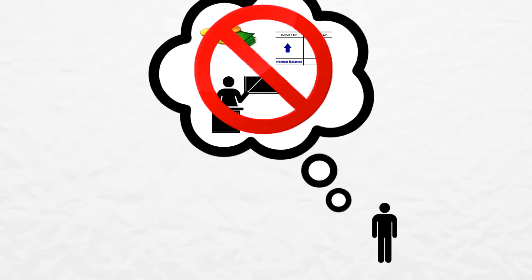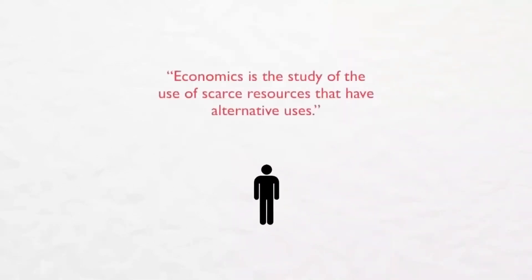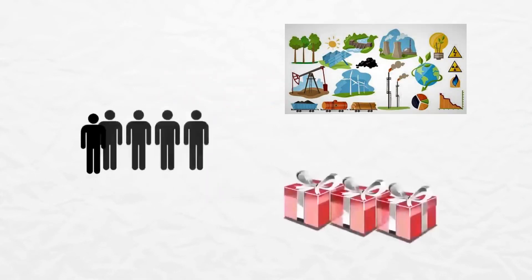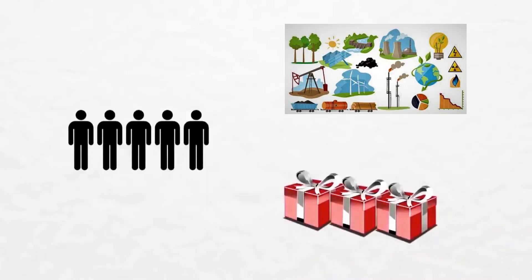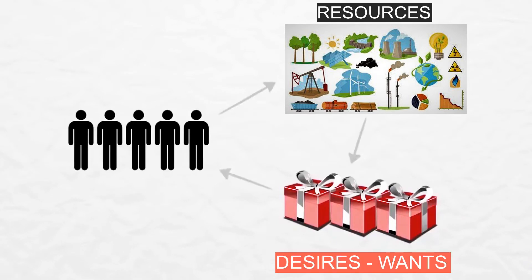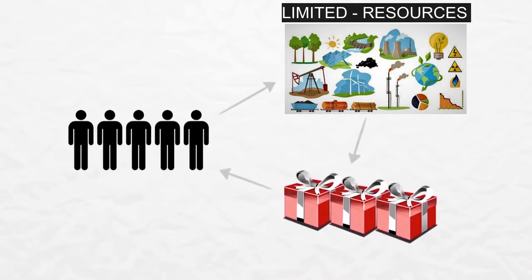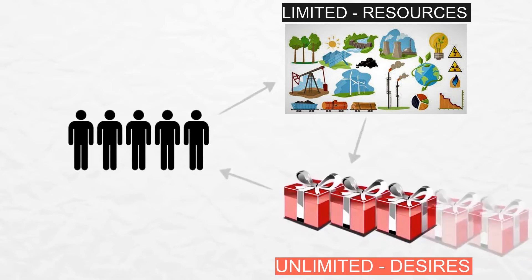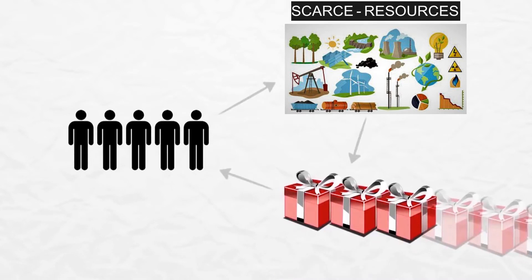But none of these are true. Economics is the study of the use of scarce resources that have alternative uses — the classic definition for economics. Basically, there are people and they need resources to fulfill their desires or wants. But the issue is these resources are limited, while desires are unlimited, so people need to make choices about how to use these scarce resources. Economists study these choices.